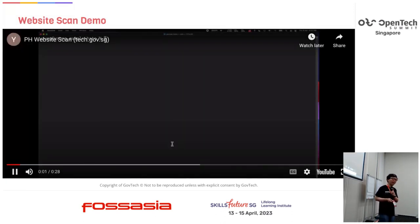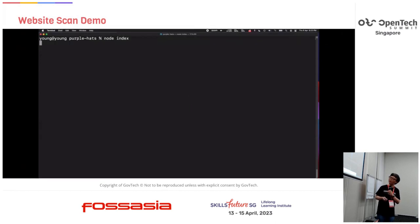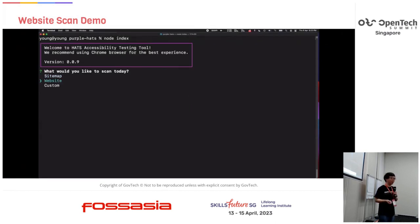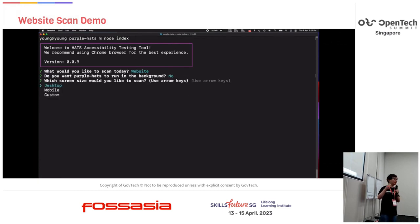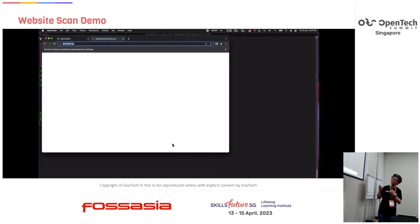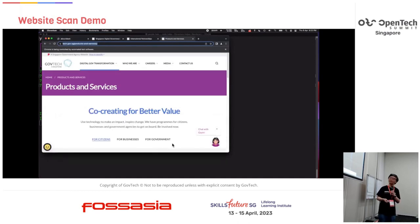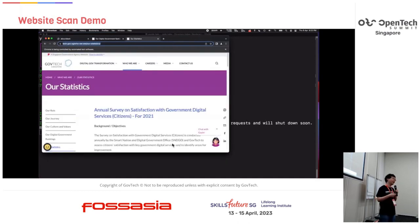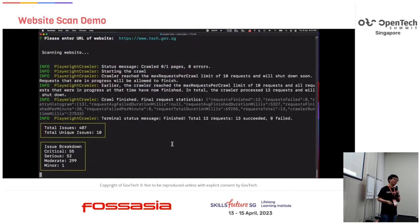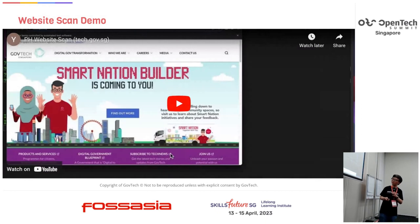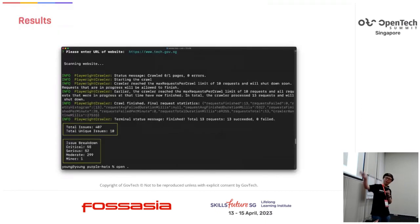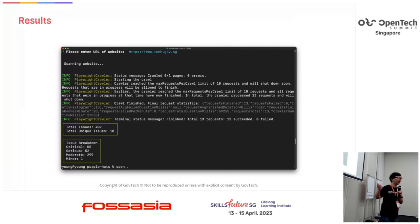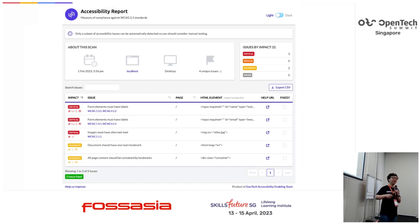Let me give an example of the console app. Once you've installed it, you just run the Node application and click on the index file. It gives you a series of prompts so users can understand what they want to do — choose a crawl, type in your URL, and select whether to scan desktop or mobile. It can scan about a hundred pages in less than a minute, depending on your laptop or computer.